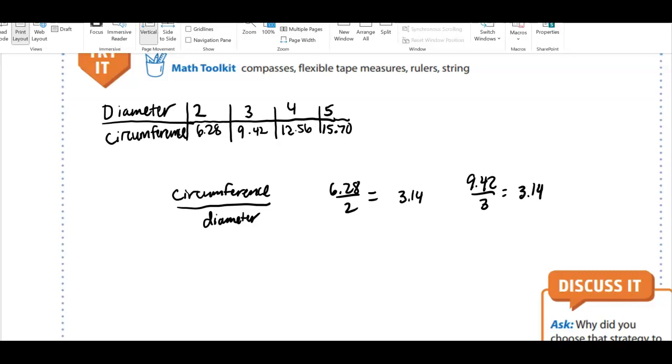Have we seen 3.14 before? Might be this thing called pi. Let's keep going. 12.56 divided by 4, we get 3.14. And then our last one, 15.7 divided by 5, we get 3.14.